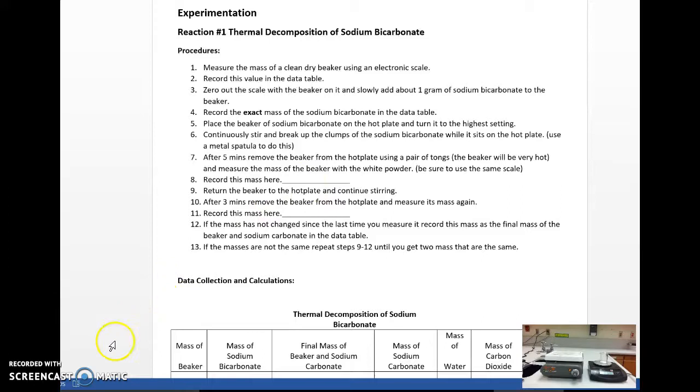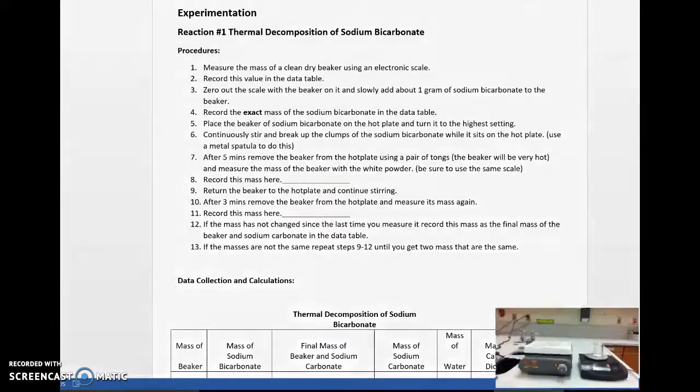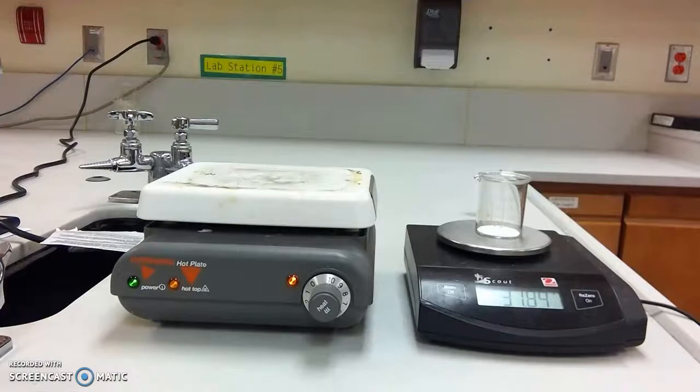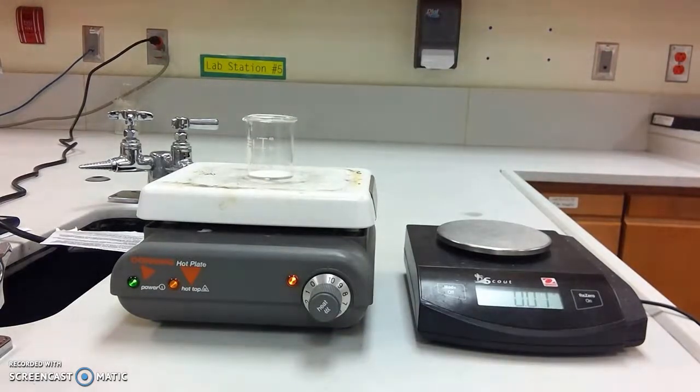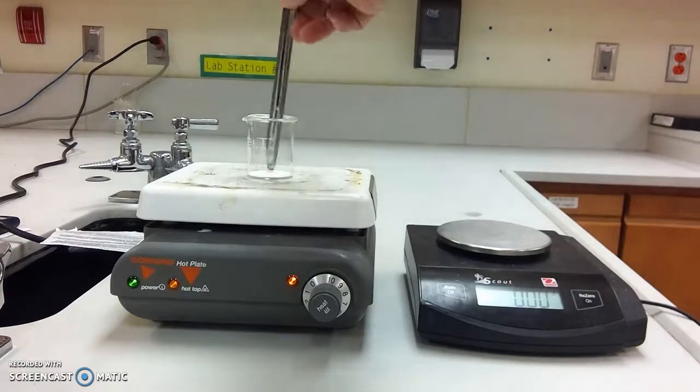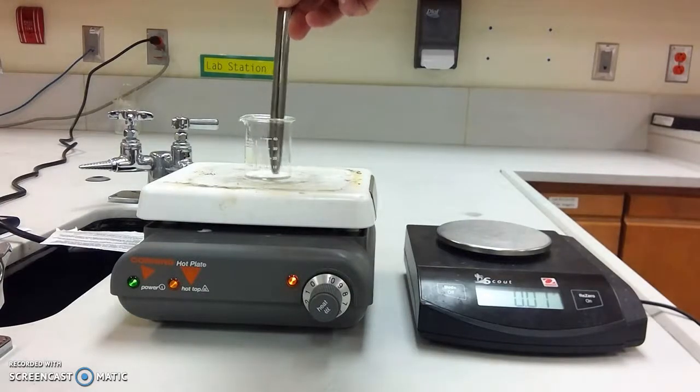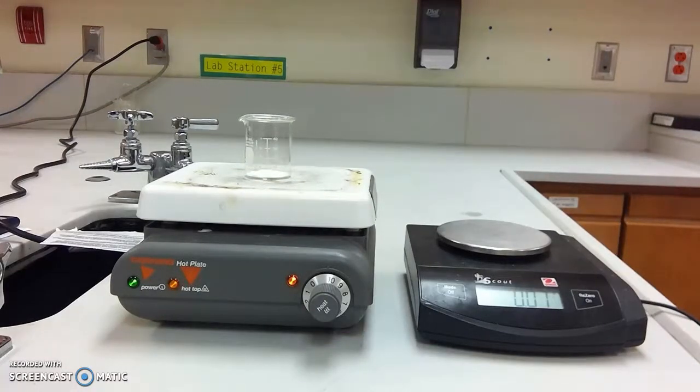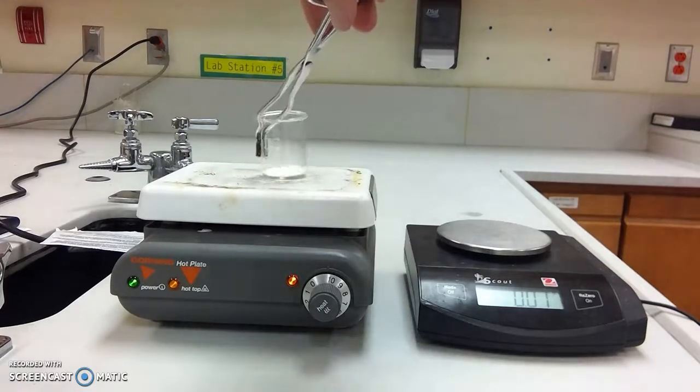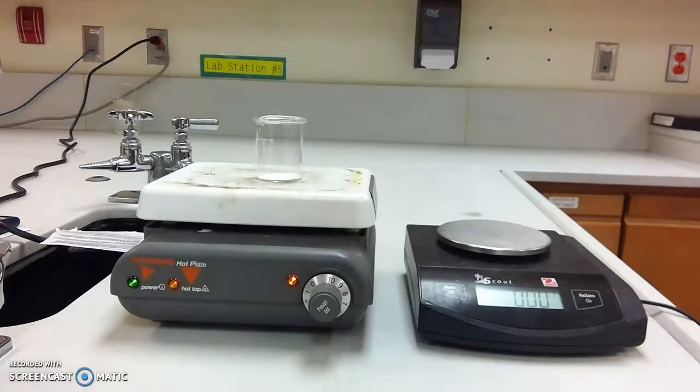Then I'm going to take that beaker. I'm going to then return it to the hot plate and continue stirring and breaking up clumps for an additional three minutes. And what I'm trying to do here is I'm trying to get all of that sodium bicarbonate to go through that chemical reaction. I want all of that to go through that reaction. So I'm continuing stirring. Let's pause time here for a minute.